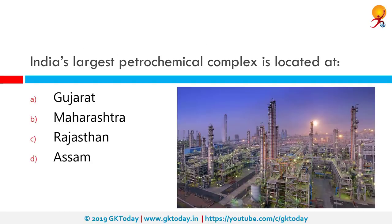India's largest petrochemical complex is located where? The correct answer is Gujarat. The largest petrochemical plant in India is located at the ONGC Petro Additions Limited (OPAL) Special Economic Zone in Gujarat, spread over 508 hectares. It is the single largest petrochemical complex in India, inaugurated by Prime Minister Narendra Modi, worth about Rs. 30,000 crore.